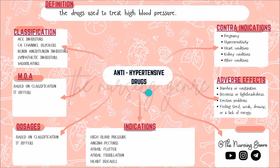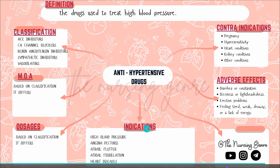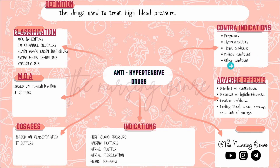In summary, anti-hypertensive drugs are used to treat high blood pressure and have five subclassifications: ACE inhibitors, calcium channel blockers, renin-angiotensin inhibitors, sympathetic inhibitors, and vasodilators. Each subclass has its own mechanism of action and doses. Indications include high blood pressure, heart diseases, atrial fibrillation, atrial flutter, and angina pectoris. Contraindications include pregnancy, hypersensitivity, heart conditions, kidney conditions, and asthma.